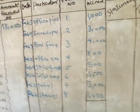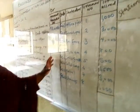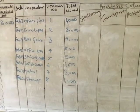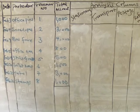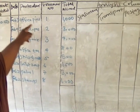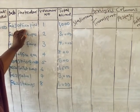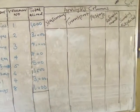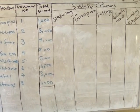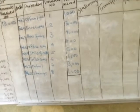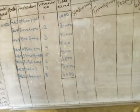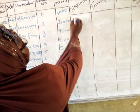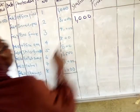Now that we have posted items into the debit side, we are going to transfer all these items under the correct heading in the analysis column. Starting with the first item on February 3rd — office pin, $1,000. Office pin is used in the office and falls under stationery, so we post $1,000 under stationery. The next one is envelope — because we use it for posting letters, we put it under postage, amount $3,000.